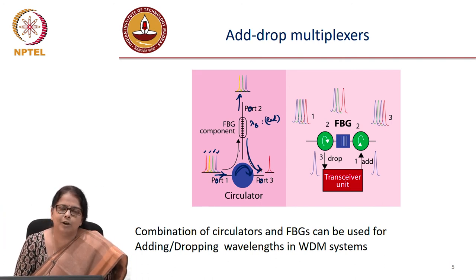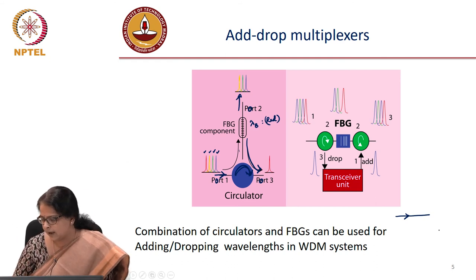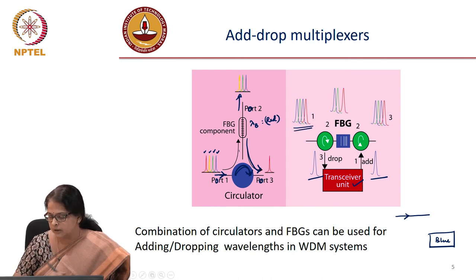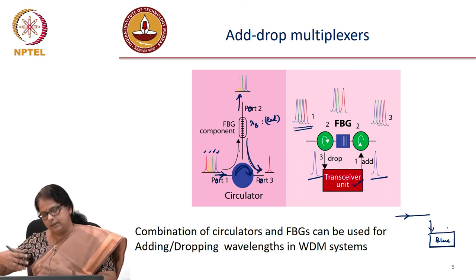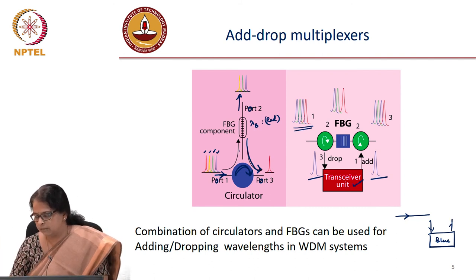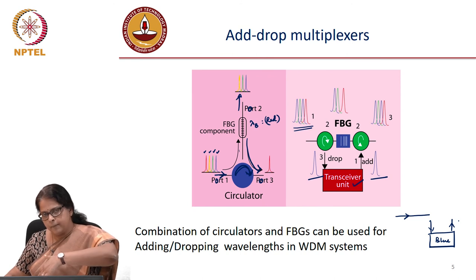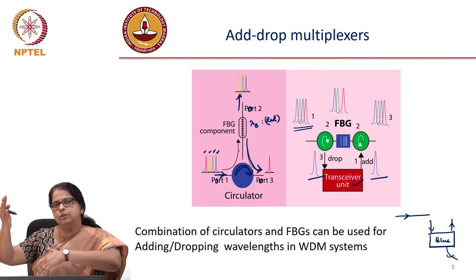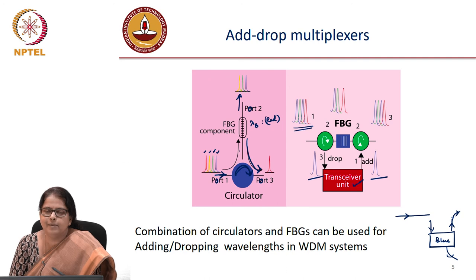To use this combination as an add-drop unit, consider a WDM system carrying information from left to right. At a node, a transceiver unit works at, say, the blue wavelength. You want to extract only blue from all the incoming colors — for example, to download internet data. You also want to upload and re-transmit from your local node. There could also be data coming into the node from another source that needs to get back into your network.